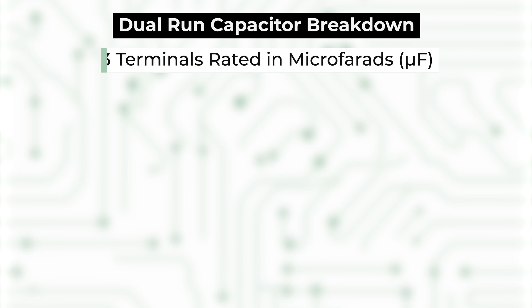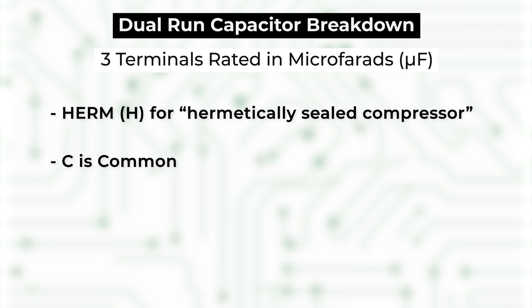A dual run capacitor has three terminals, and it's rated in microfarads. Here's the quick breakdown. HERM, or sometimes just H, stands for Hermetically Sealed Compressor. This terminal on the capacitor connects to the compressor's auxiliary winding, and typically has a higher microfarad rating. C is common, and fan is for the fan motor.